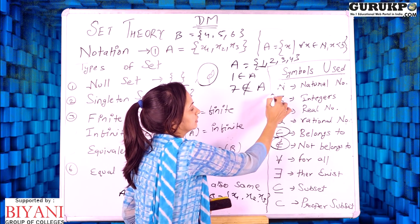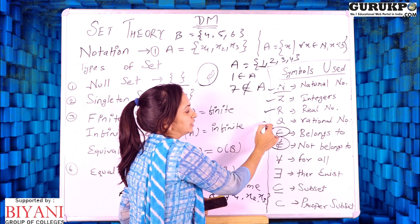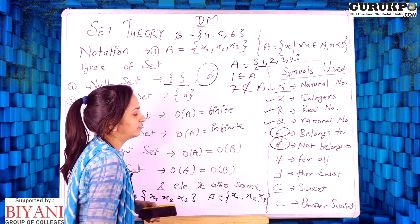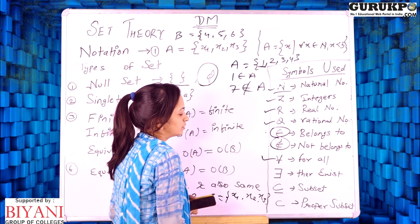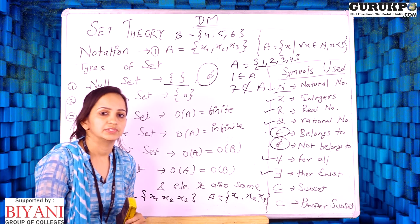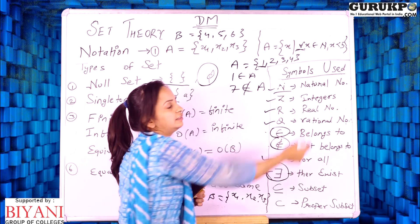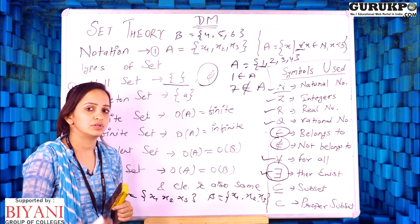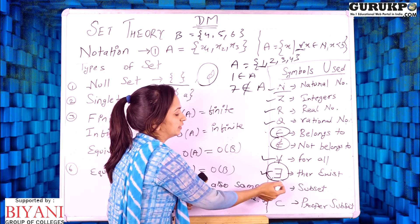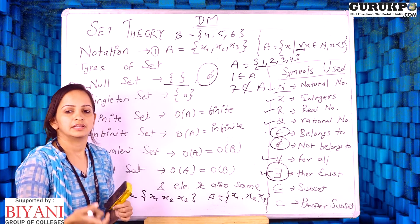The symbols used include the basic sets: natural numbers, integers, real numbers, and rational numbers. The symbols '∈' and '∉' are for belongs to and not belongs to. The '∀' symbol means 'for all' — if a condition applies to all elements of a set, we use the for-all symbol. The '∃' symbol means 'there exists' — if the condition applies to only some elements of the set, we use this symbol.